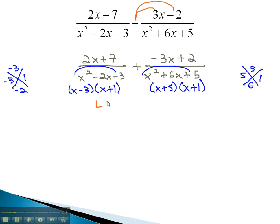We can see that for our least common denominator, we need an x minus 3, an x plus 1, and an x plus 5. And we already have the x plus 1, so there will be no need to list it twice. In order to get our common denominator, we will multiply by any missing factors.